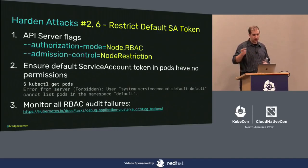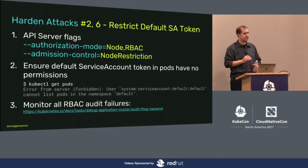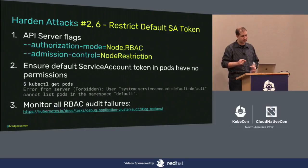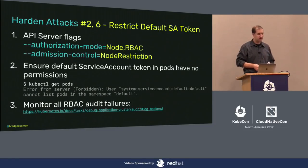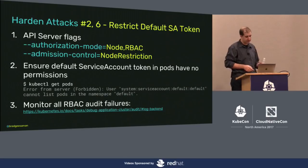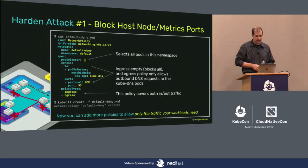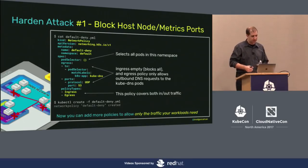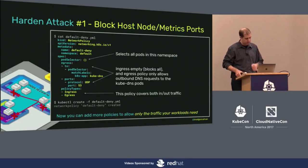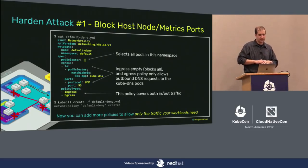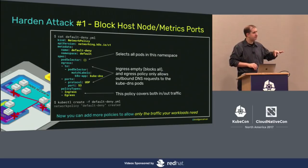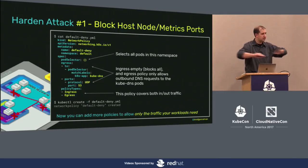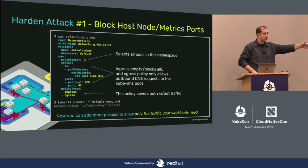Restricting the default service account token: node RBAC and node restriction. You have to exec into pods and verify this — it's very easy to miss or do incorrectly when messing with RBAC. Monitor all RBAC audit failures: it's either a misconfiguration of your app or somebody's attacking you and failing. In 1.8 and above supporting egress natively, apply a default deny policy to every single namespace saying ingress and egress — nothing is allowed in this namespace, except kube-dns lookups to start.